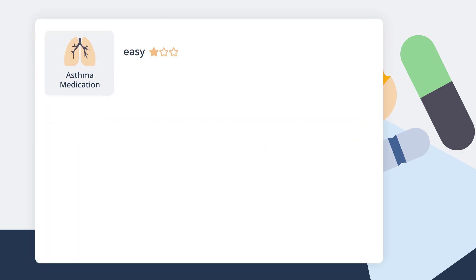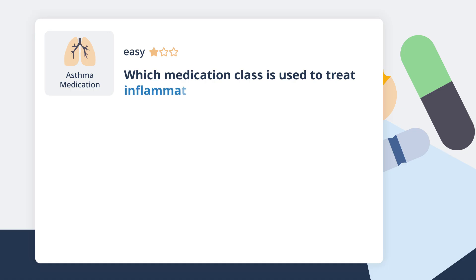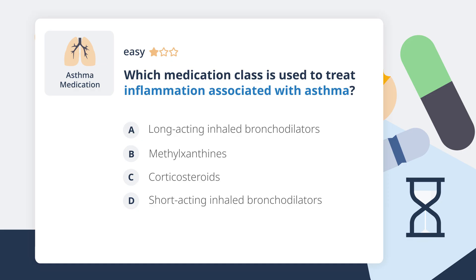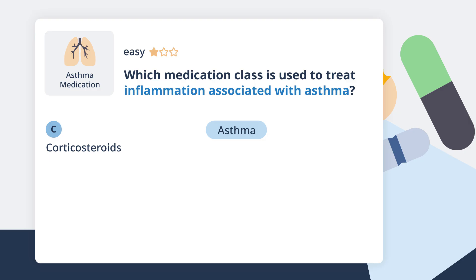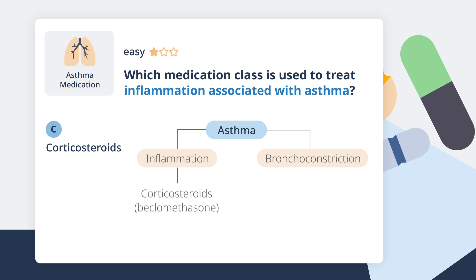Let's start with an easy one. Which medication class is used to treat inflammation associated with asthma? Remember, asthma involves both inflammation and bronchoconstriction. For the inflammation, we're going to give corticosteroids like beclomethasone. For the bronchoconstriction, for acute attacks, we give a short-acting inhaled bronchodilator like albuterol — that's a SABA.